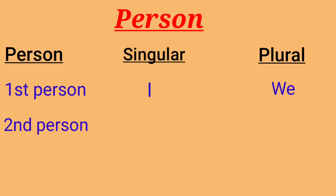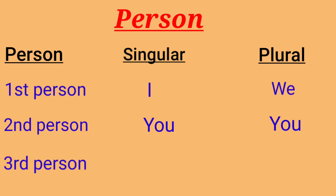When I speak to you or a group of people, that's called second person. The second person point of view belongs to the person or people being addressed. Second person refers to the addressee. It uses the subject pronoun 'you' — both for second person singular and second person plural.